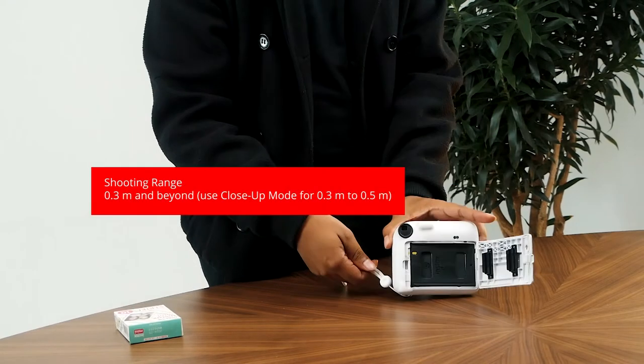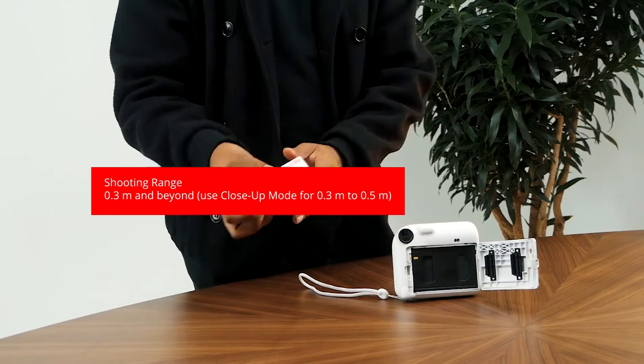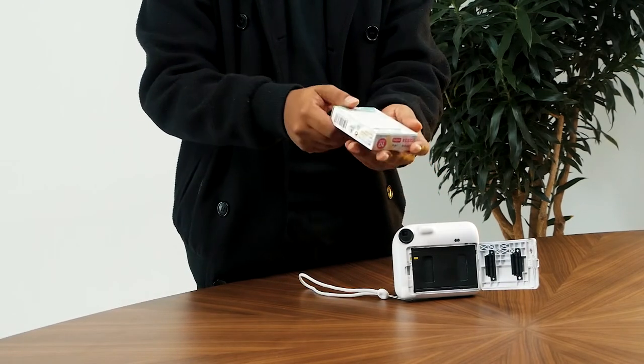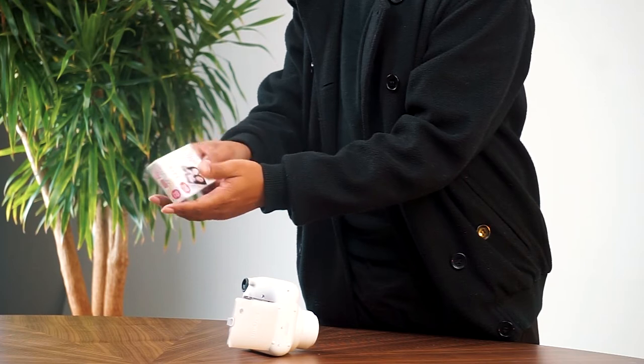The shutter is a programmed electronic shutter with a range from 1/2 to 1/250 seconds, and it supports slow sync for low-light conditions.